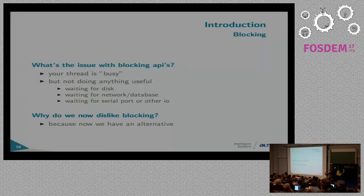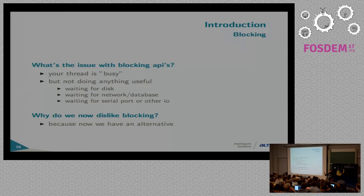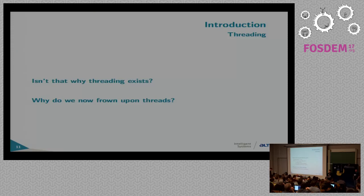You might ask what's the issue with blocking APIs and why only now do we start disliking them. When you block, your thread is busy and if you're waiting on IO or some other event, it's doing nothing useful while you still pay the overhead. I grew up in the one-thread-per-connection style of programming, and except for callbacks there wasn't really an alternative. But now that we do have an alternative, I'm more into non-blocking approaches.